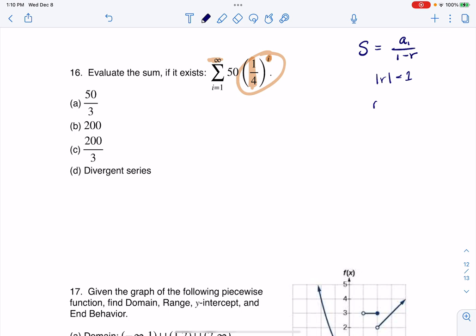So if I look at my r in this case, it's 1 fourth. So the absolute value of r is less than 1, which means it's going to converge to a number. So I could rule this out.